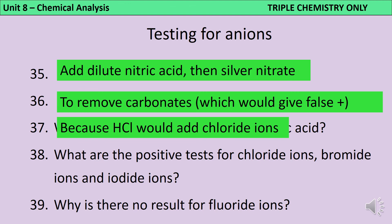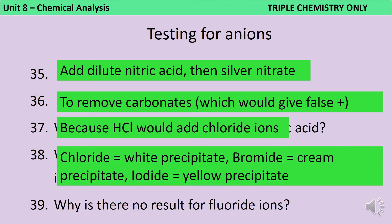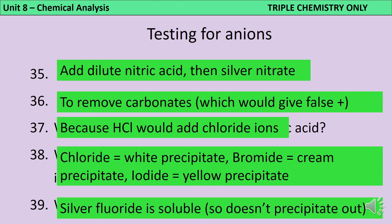Chloride ions, bromide ions, and iodide ions all produce a precipitate when silver nitrate is added, but these differ in colour. Chloride ions produce a white precipitate, bromide ions produce a cream precipitate, and iodide ions produce a yellow precipitate. There's no result for fluoride ions, because silver fluoride is soluble so it doesn't precipitate out.